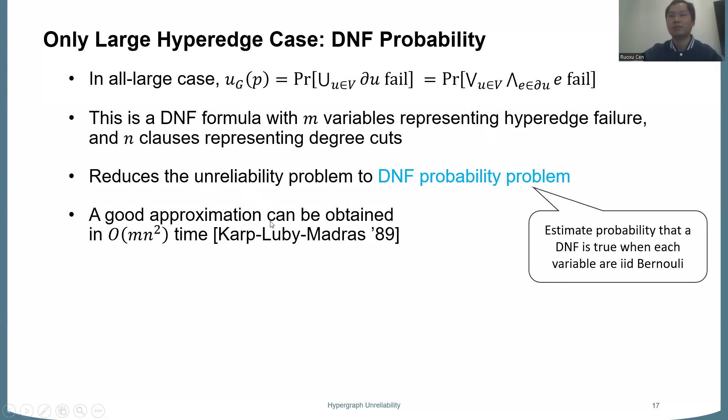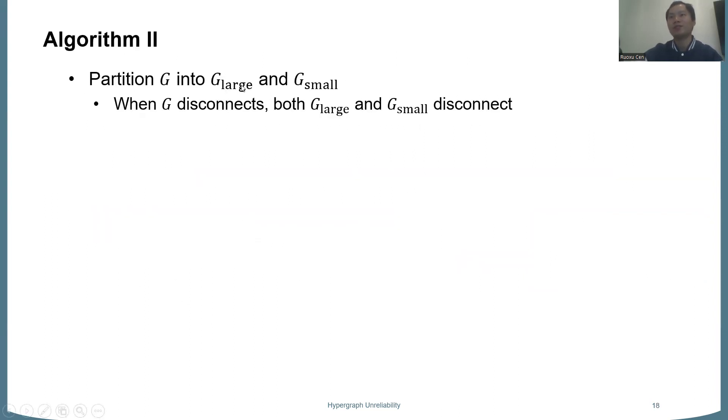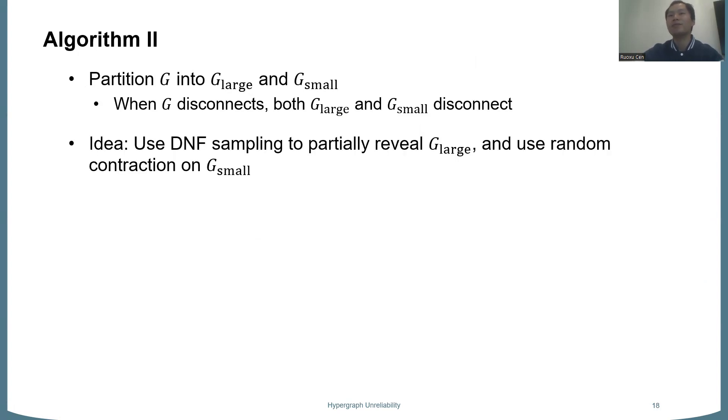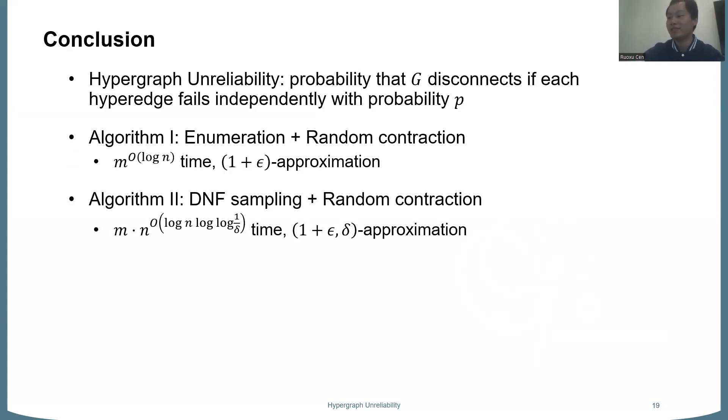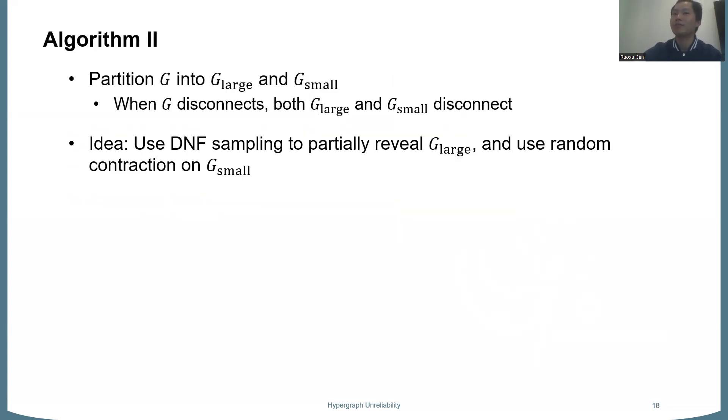And for that problem, we know some good approximation. As I said, also, it's sharp-P hard, but we also want an approximation. And this can be solved in polynomial time. Okay? So in this way, we can actually solve this extreme case of all hyperedges large. In general, we want to combine these two parts of the algorithm. That is, we first partition the hyperedges into large and small. And for the large part, we use this DNF probability idea. And for the small part, we still run the random contraction idea. Okay? So we will be good if we contract some large edge or get a size decrease in the small part. So this is the main idea of the second algorithm. But it will not directly work because the large part and the small part will not synchronize. So we need something more to resolve this issue. And I will skip here.